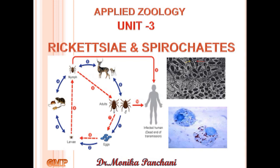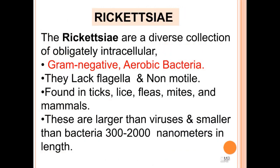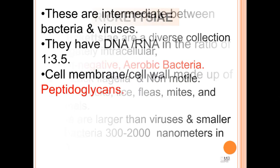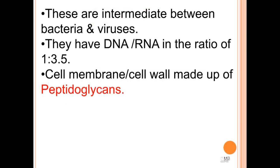Dear students, now the second part of unit 3: rickettsia and spirochetes is the rickettsia. The rickettsia are a diverse collection of obligatory intracellular gram-negative aerobic bacteria. They lack flagella and they are non-motile. They are found in ticks, lice, fleas, mites and mammals. These are larger than viruses and smaller than bacteria, in between 300 to 2000 nanometers in length. These are intermediate between bacteria and viruses.